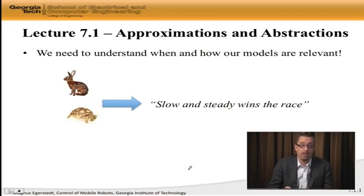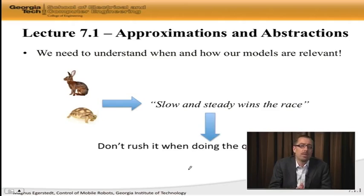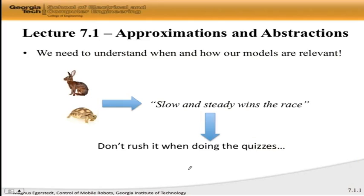Like, slow and steady wins the race if the tortoise wins, or in the Zeno phenomenon case, the hare is going to win. What we should take away from that is, don't rush it when you're doing the quizzes for this course. Now the hare and the tortoise actually had something to say about how we should approach the course. And similarly, the models are fables. They have some relevance, but they're not exactly telling the full story.